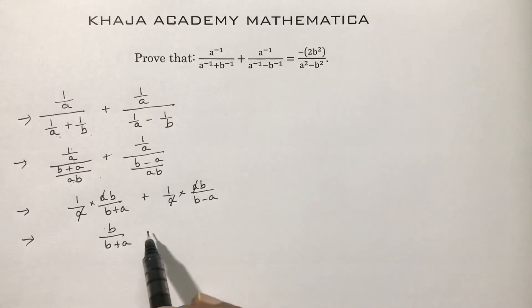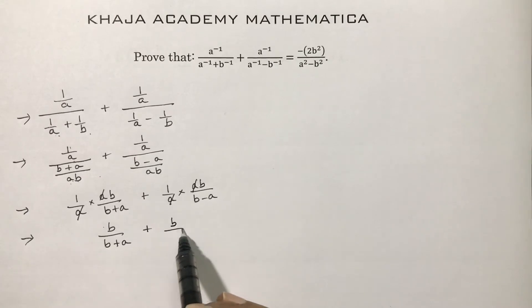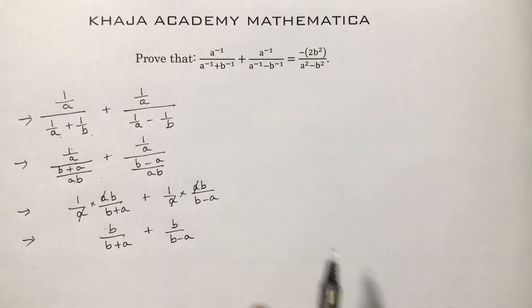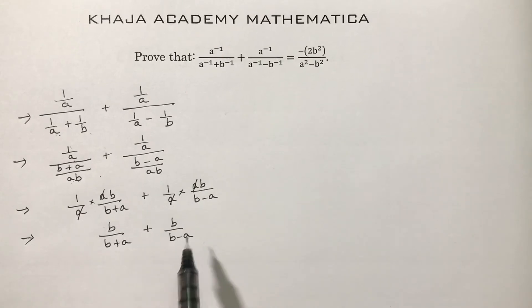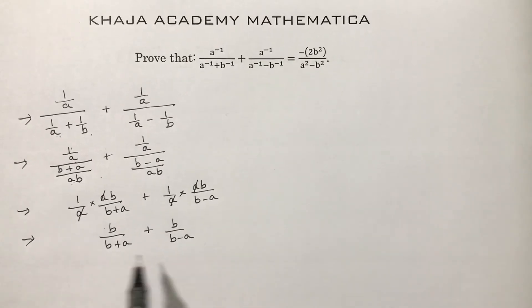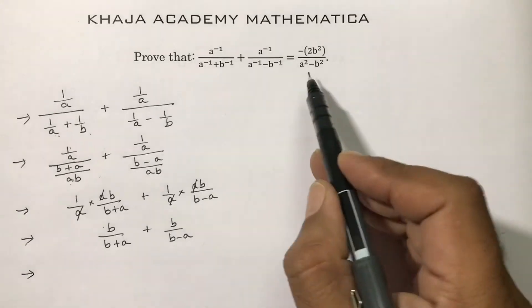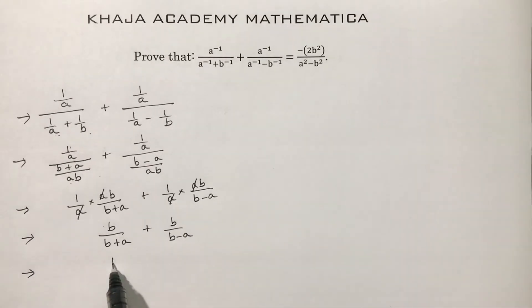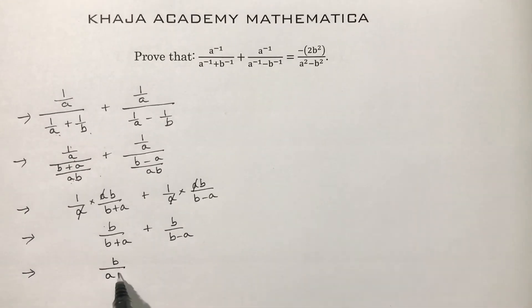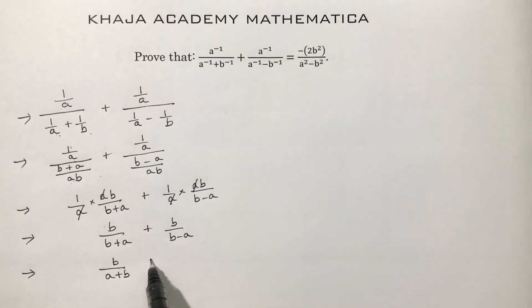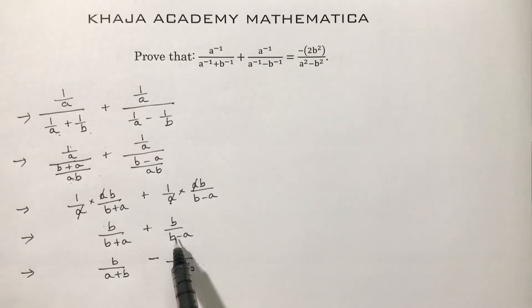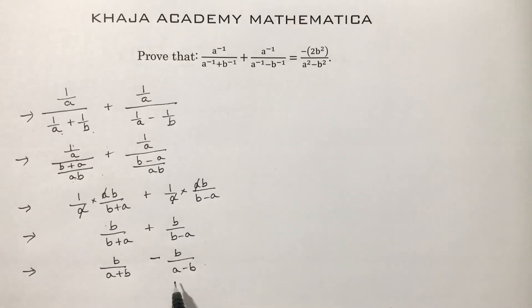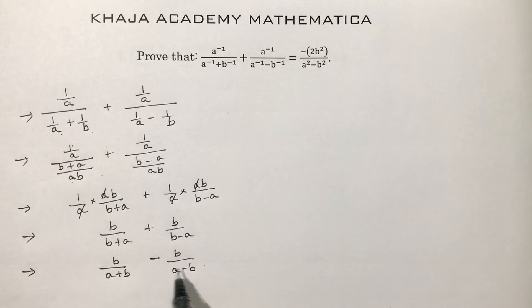Now we have b/(b + a) plus b/(b − a). To set up for an a² − b² form in the denominator, rewrite this as b/(a + b) minus b/(a − b).